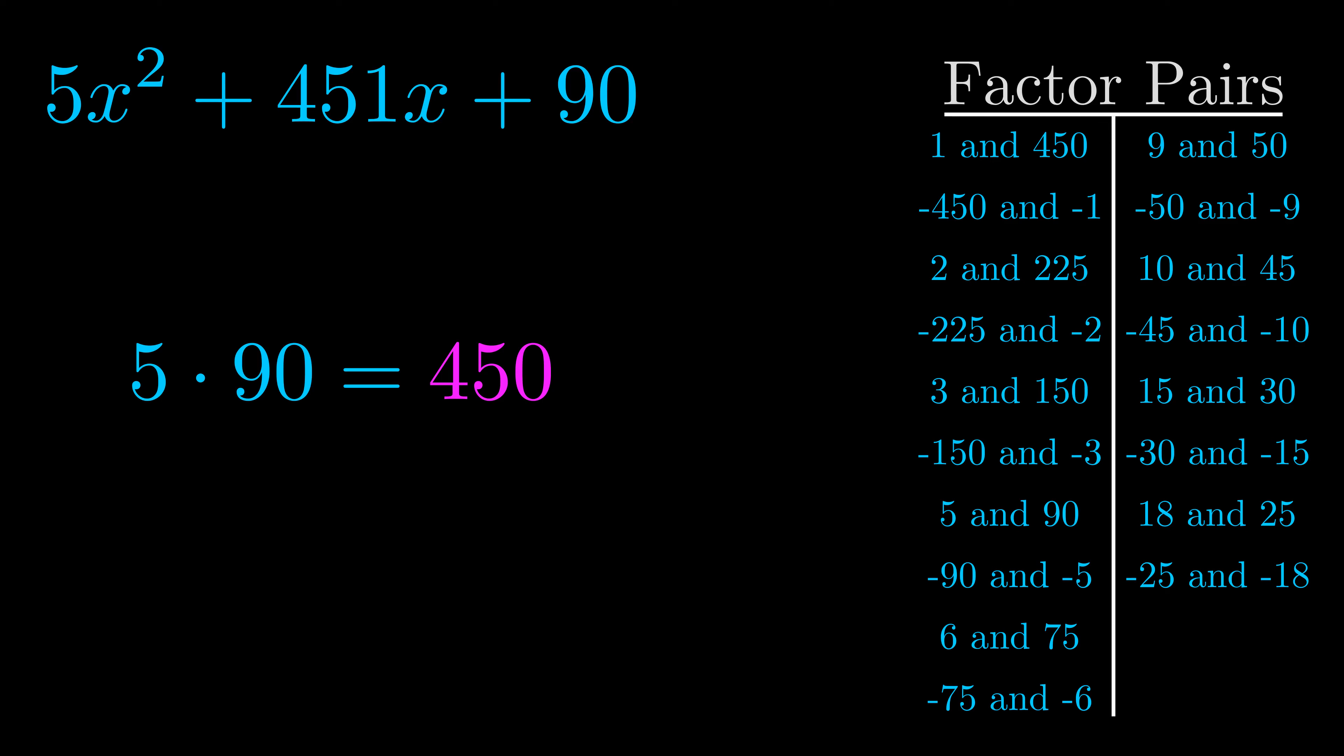The b value is the coefficient on the x term. That's the middle term, the one that we haven't done anything with yet. And really this is the only factor pair that we need.